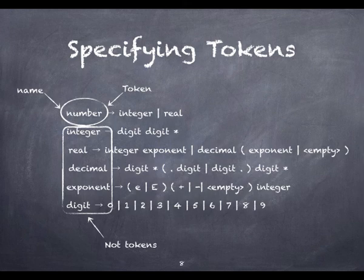Such recursive definitions are the distinguishing characteristic of context-free grammars. To generate a valid number, we expand out the sub-definitions and then scan the resulting expression from left to right, choosing among alternatives at each vertical bar and choosing a number of repetitions at each clean star. Within each repetition, we may make different choices at vertical bars, generating different substrings.